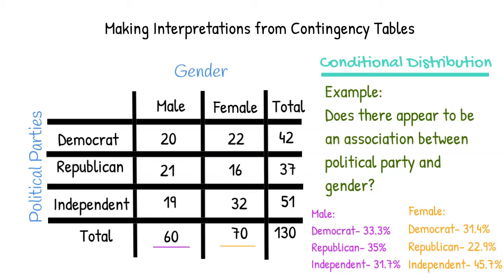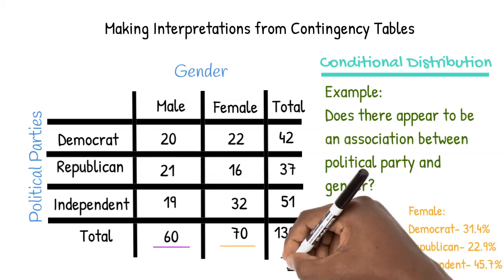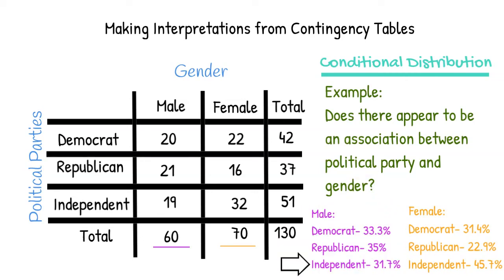The percentages are very different. 31.7% of males are Independent, while 45.7% of females are Independent. These percentages are even more different. If the percents were the same, there would be no association. But since the percentages are different, we see that there is an association between political party and gender within this group.